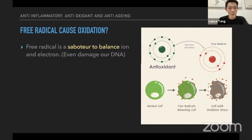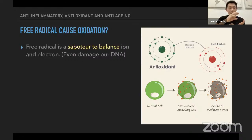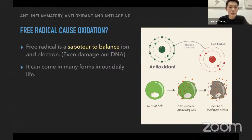Whenever free radicals damage our molecular cells, they will eventually also damage our DNA. If this happens at a large capacity, it will actually alter our DNA. When our DNA is interrupted on a very large scale, it affects our optimal health, because when damaged DNA is duplicated into new cells, you actually reproduce bad or non-optimal cells. In the long run, this causes a lot of health issues.